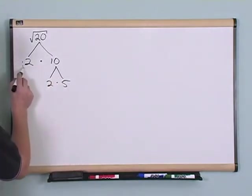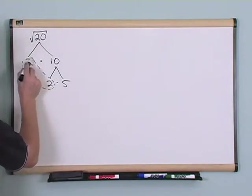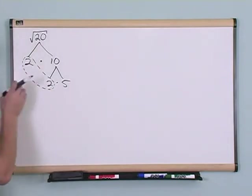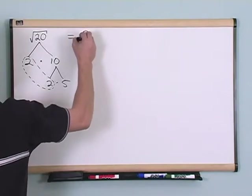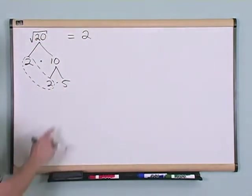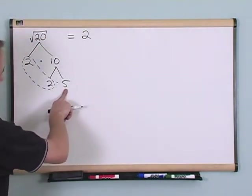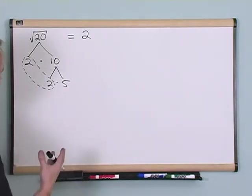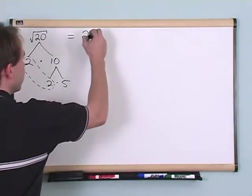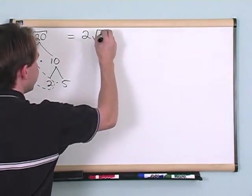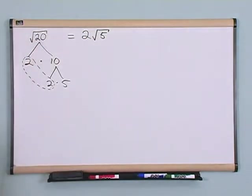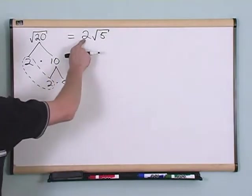So then I just draw a dotted line around these two numbers because I found a pair of numbers, and I pull those outside the radical and I put a 2 there. But notice I've still got this 5 left over and it's all by itself, so you can't just pull it out and you can't just ignore it. So what you're left with is still the square root of 5. So the answer to this problem when you say simplify square root of 20, the answer is 2 times the square root of 5.